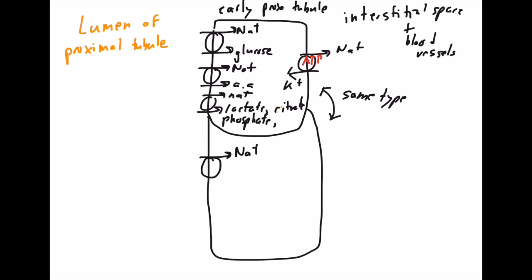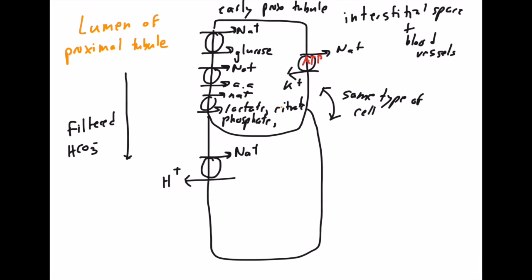What I'm highlighting here in the lower cell is the same type of cell, but a different aspect of it. You also have an antiporter — the sodium H+ antiporter — which is really going to help us reabsorb bicarb.